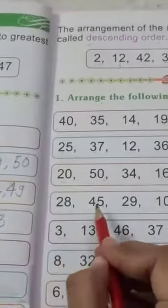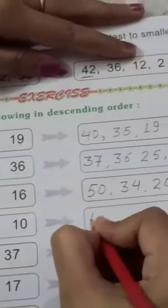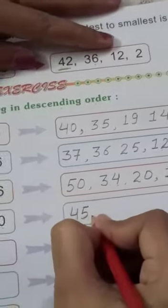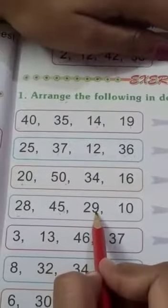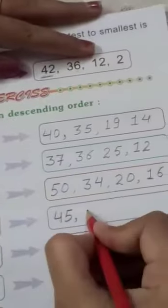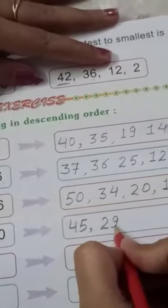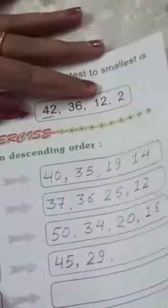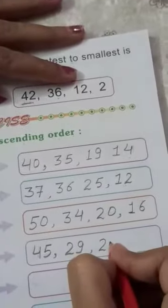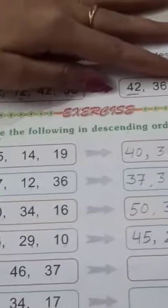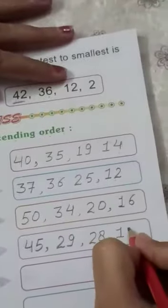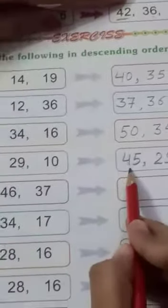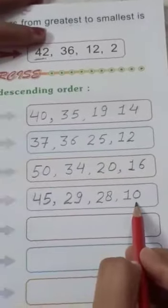Now number 4. 28, 45, 29, 10. Which is greatest number? 45. Then 28, 29, 10. 29. Then 28, 10. Which is greater, 28 or 10? 28. And at last number 10. 45 is greatest number and 10 is smallest number.